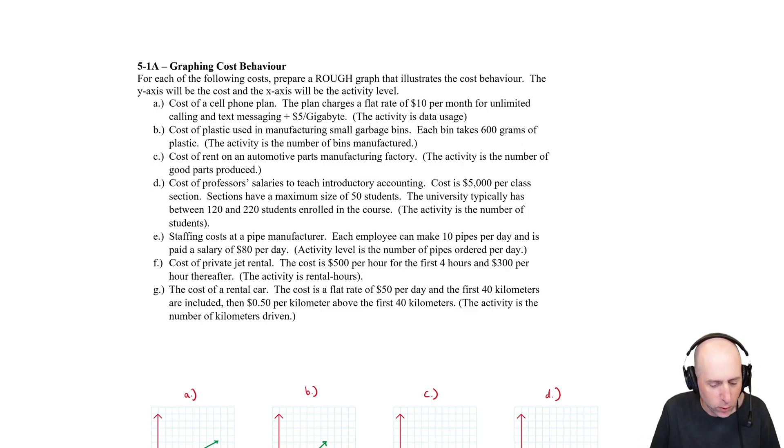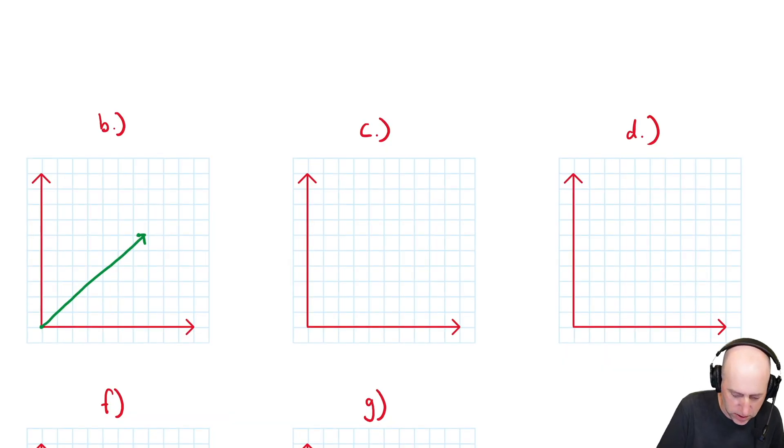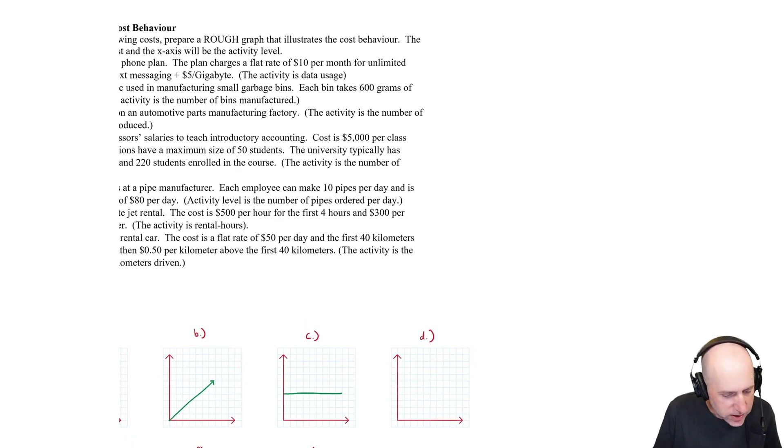Part C: cost of rent on an automotive parts manufacturing factory. The activity is the number of good parts produced. Well, my landlord doesn't get to see how busy I am before they charge me rent and go, oh you're really busy, I'm going to jack up the rent. No, no, no. Rent is fixed, right? The rent is whatever it is. Let's say it's a big facility, it's $20,000 a month. It doesn't matter if I make one part or a thousand parts, the rent is the same. So this is a fixed cost and it will graph out something like that, a straight line.